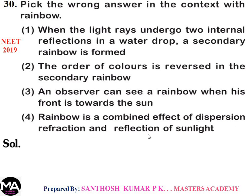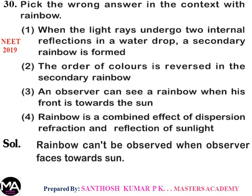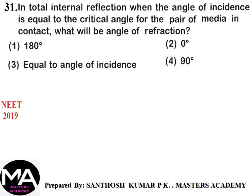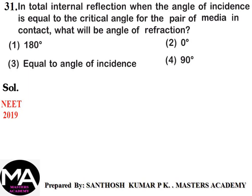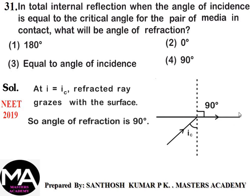Question 31: In total internal reflection, when angle of incidence equals the critical angle, what is the angle of refraction? At the critical angle, the refracted ray grazes the surface. Therefore the angle of refraction is 90°. Option 4.